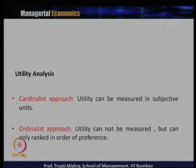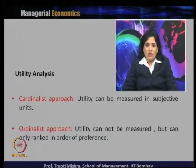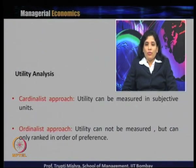There are two ways to measure utility: the cardinalist approach and the ordinalist approach. Under the cardinalist approach, utility can be measured in subjective units. Under the ordinalist approach, utility cannot be measured but can only be ranked in order of preferences. In the cardinalist approach, utility can be quantified, whereas in the ordinalist approach, it can only be ranked.